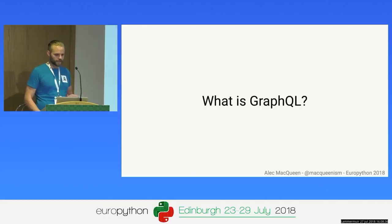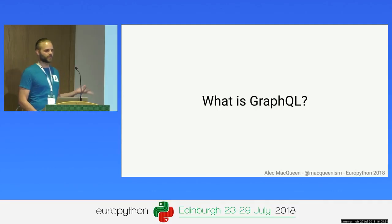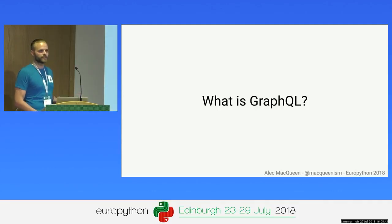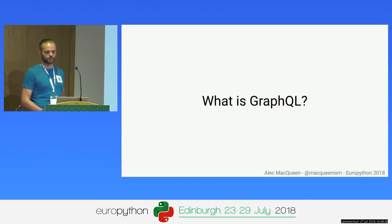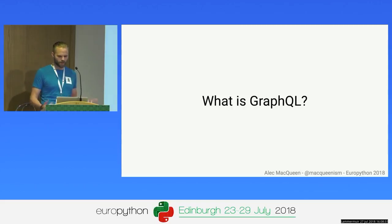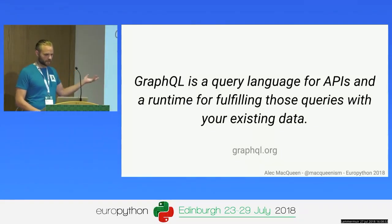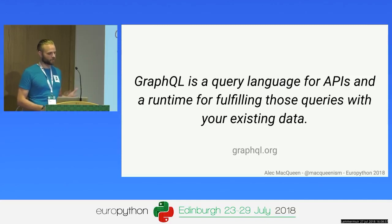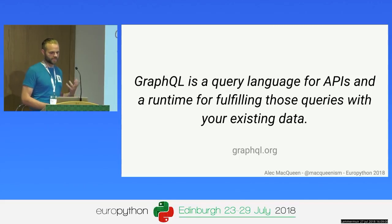So, GraphQL — what is it? It's an API specification. It's been built and open sourced by Facebook in 2015, and it's now used by many companies as part of their APIs, including GitHub, PayPal, Twitter, and of course Facebook. But what actually is it? It's a query language for APIs and a runtime for fulfilling those queries with your existing data.